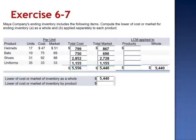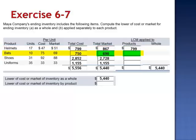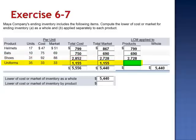If the company chooses to be even more conservative, they will apply the lower of cost or market calculation to each product. For the helmets, the lower of cost $799 versus market $867 is the cost of $799. For the bats, the lower of cost or market is the $690 market value. For the shoes, the lower of cost or market is market at $2,728. And for the uniforms, cost and market are the same. This results in an even more conservative inventory valuation of $5,372.